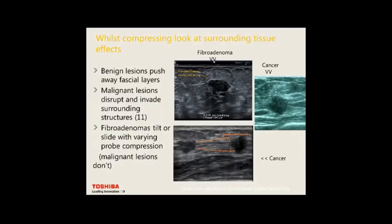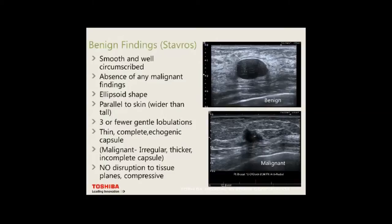Fibroadenomas will tilt or slide with probe compression; malignant lesions don't. Benign findings are smooth and circumscribed, ellipsoid in shape, parallel to the skin, wider than tall, with three or fewer gentle lobulations. Malignant lesions will eat through — you can see this one eating through the premammary fascia. Benign lesions have a thin complete echogenic capsule; malignant lesions have an incomplete capsule and will show disruption to tissue planes.